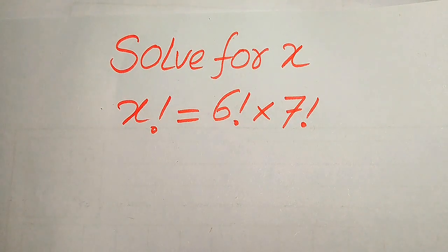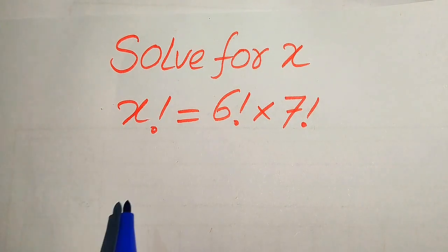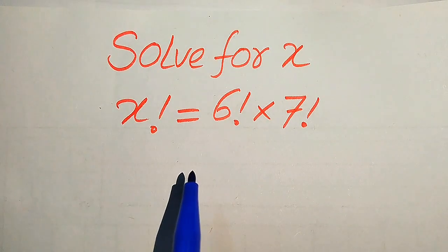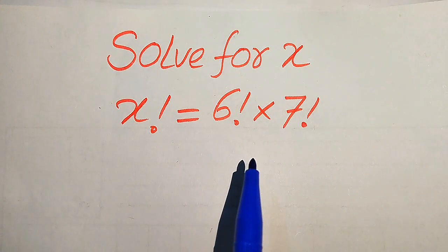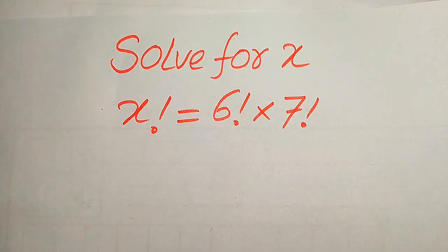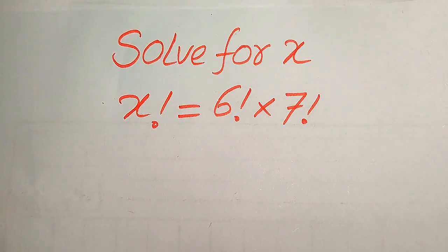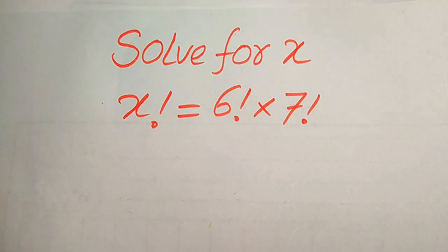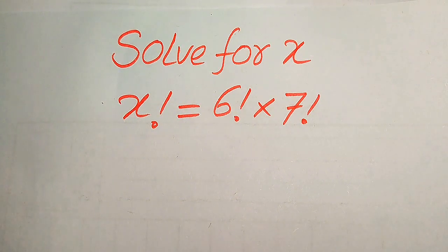Hello everyone. How to solve this problem for the values of x if we have x factorial equals to 6 factorial multiplied by 7 factorial. This is a basic factorial math problem. Here we need to find all the values of x, and at the end we will check which of the values of x satisfy the given question statement or which are extraneous roots.